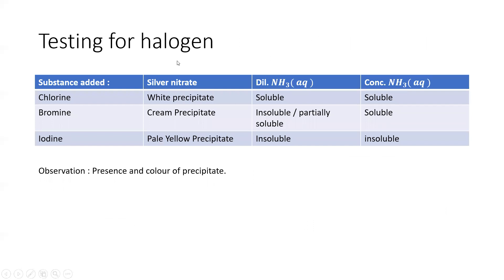To test for hydrogen halides: dissolve them and add silver nitrate. If a white precipitate is seen, chloride is present. If a cream precipitate is seen, bromide is present. If a pale yellow precipitate is seen, iodide is present.